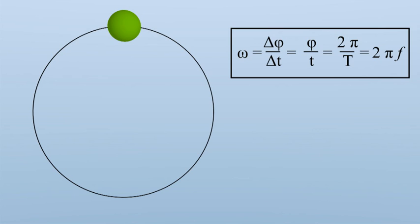Let's assume the object in motion has a frequency of 5 Hertz. Then the resultant angular velocity is 2 times pi times 5, or approximately 31 radians per second.